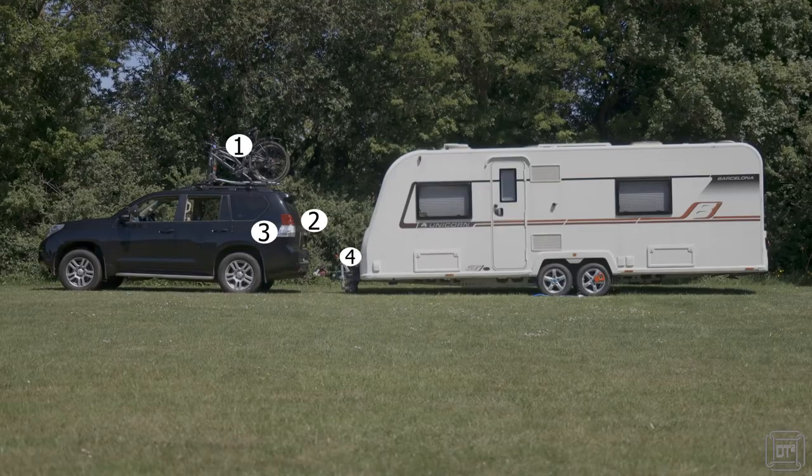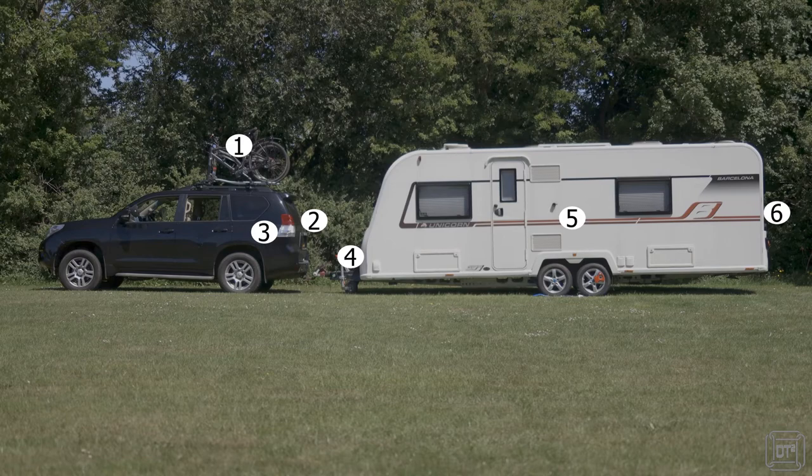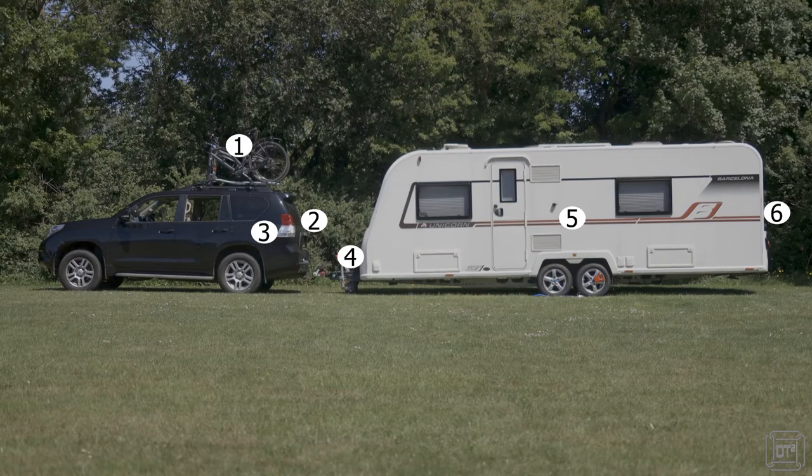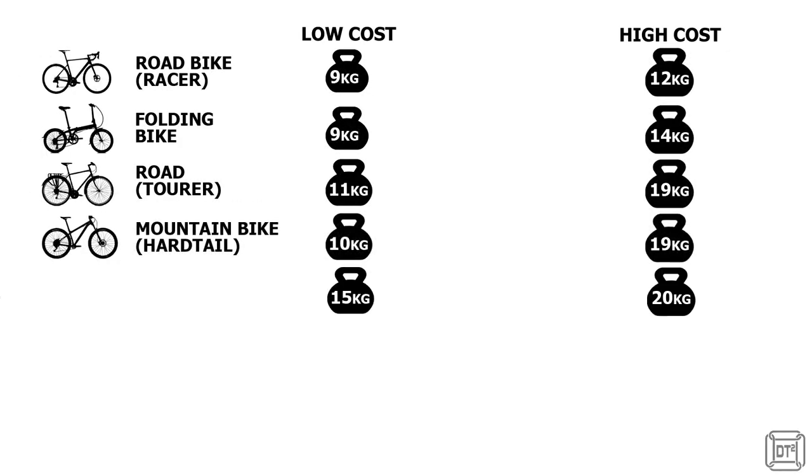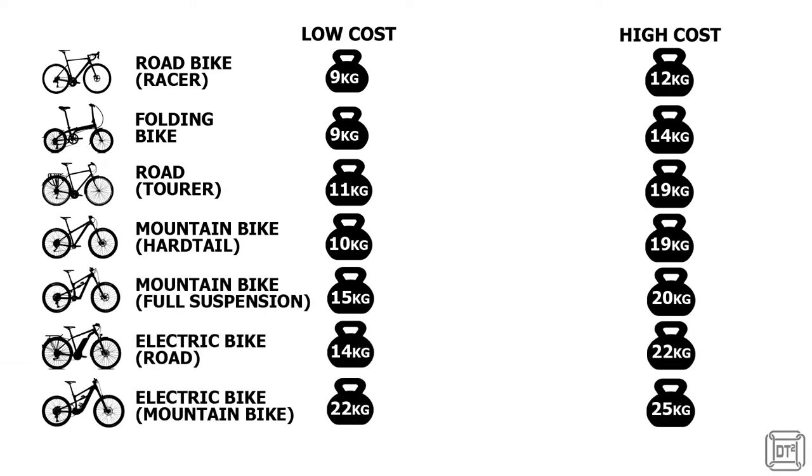Probably the first thing you need to consider is how to transport the bikes and there are about six general locations where you can consider carrying bikes when towing. Before I get into that I'll just cover the most important consideration generally and that is weight. A typical bike weighs between 15 and 20 kilos but the type of bike can increase that weight quite drastically. Generally speaking mountain bikes and e-bikes weigh more than road bikes.